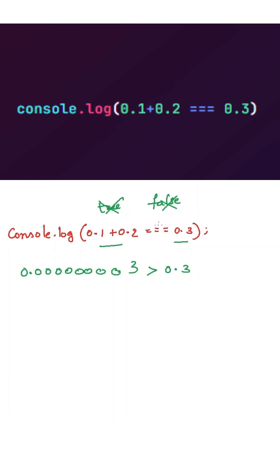Now as we are comparing this floating point values by using the strictly equal to operator, it will return false because strict equality operator will compare the exact values, but this is slightly greater than 0.3. So it will return false.